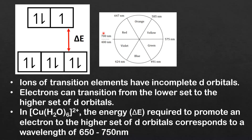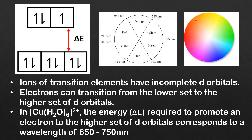To determine which color will be absorbed and which color will be transmitted by the hexa aqua copper 2 ion we can use a color wheel. The wavelength of light being absorbed is in the range of 650 to 750 nm, and if we look at our color wheel that corresponds to the wavelength of red light. So if red light is being absorbed, the opposite or complementary color is being transmitted. We can see on the color wheel that the complementary color to red is blue — the color of our copper 2 sulfate solution.